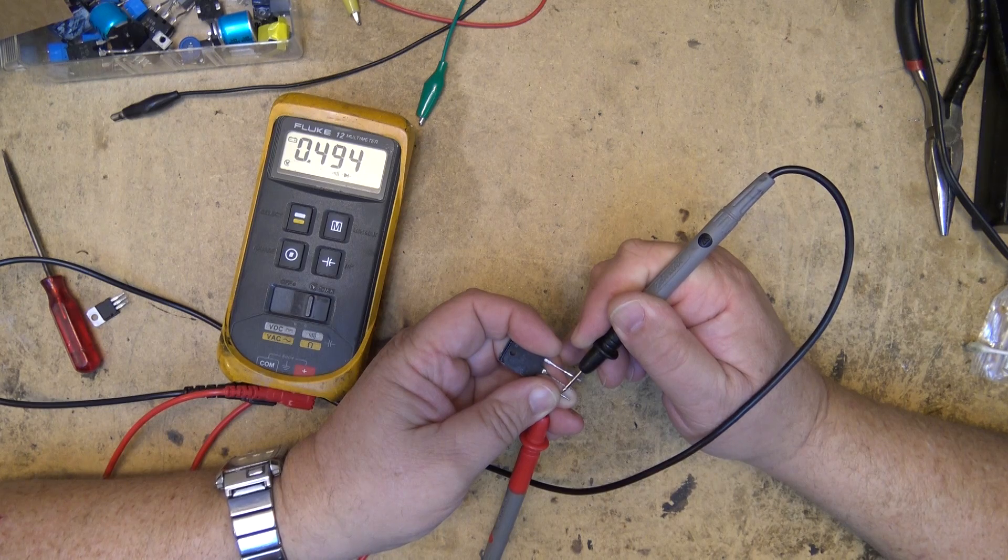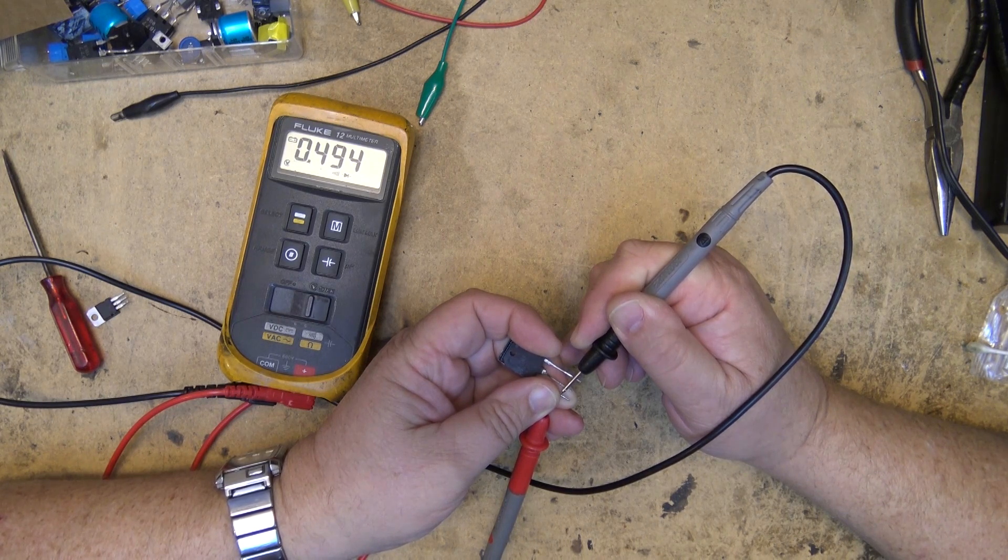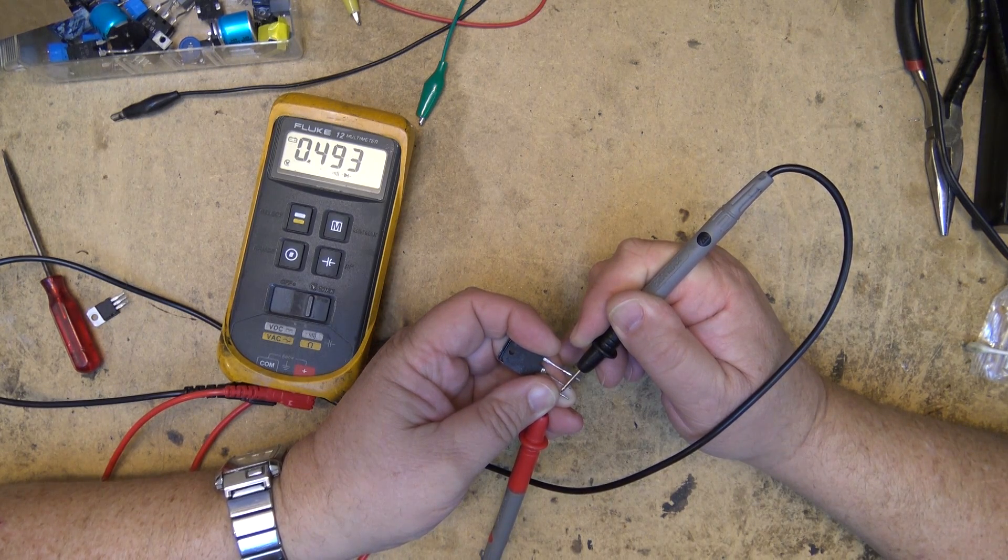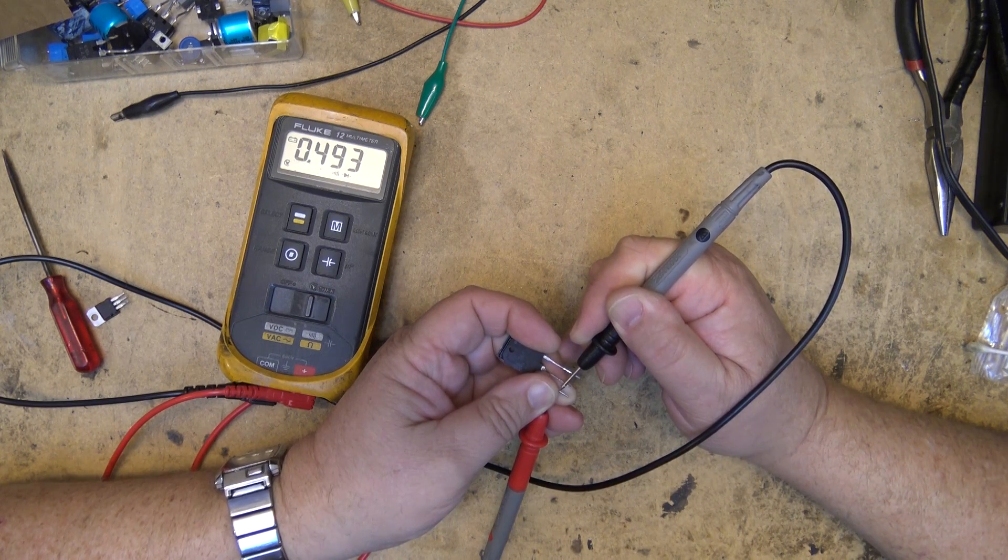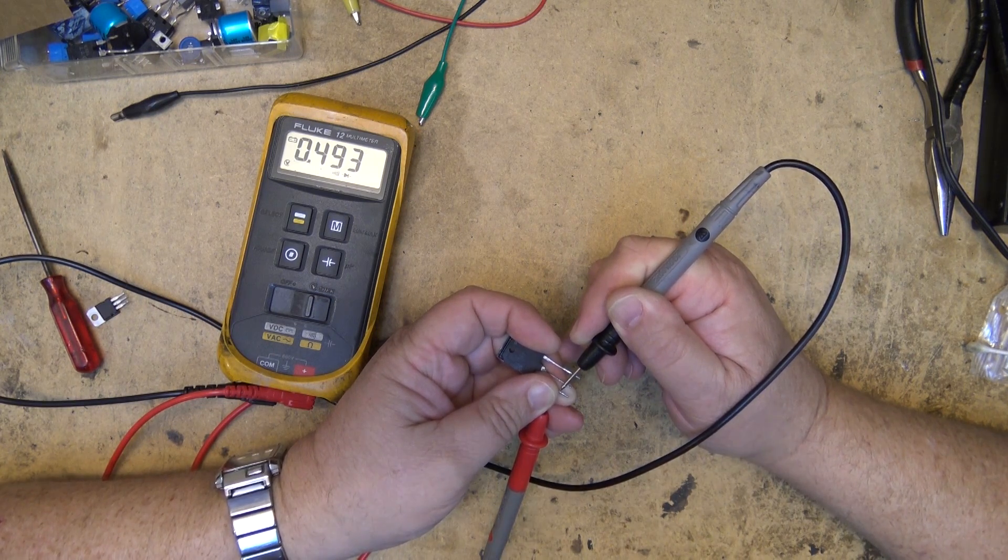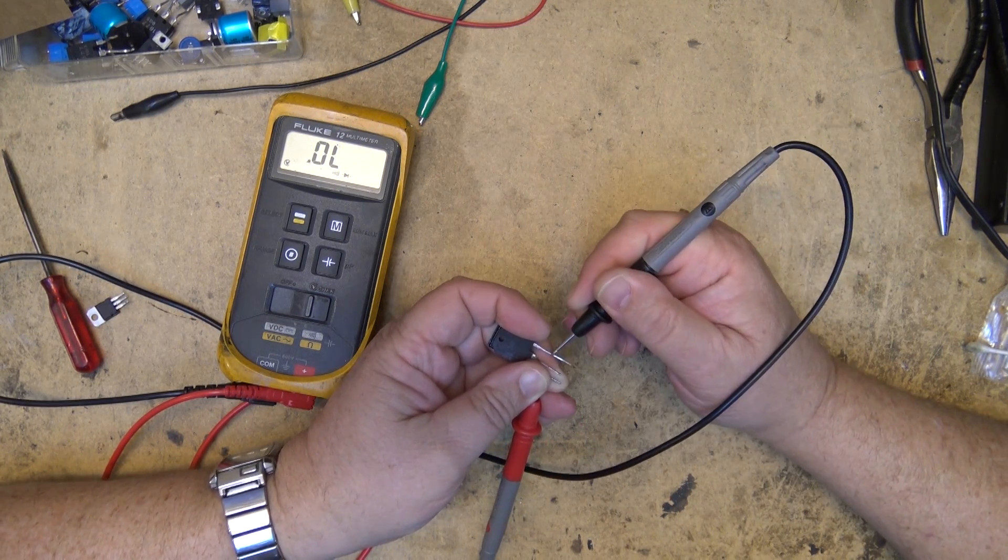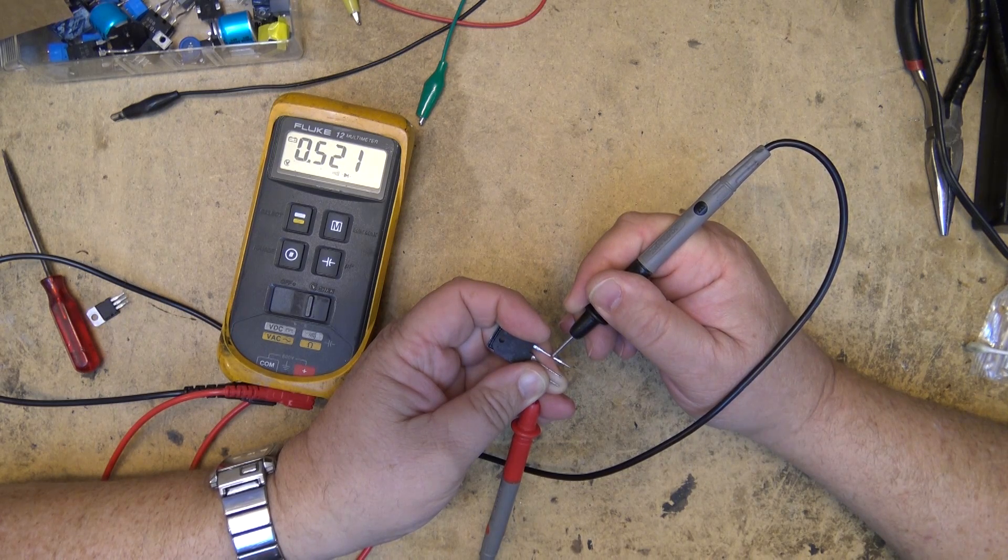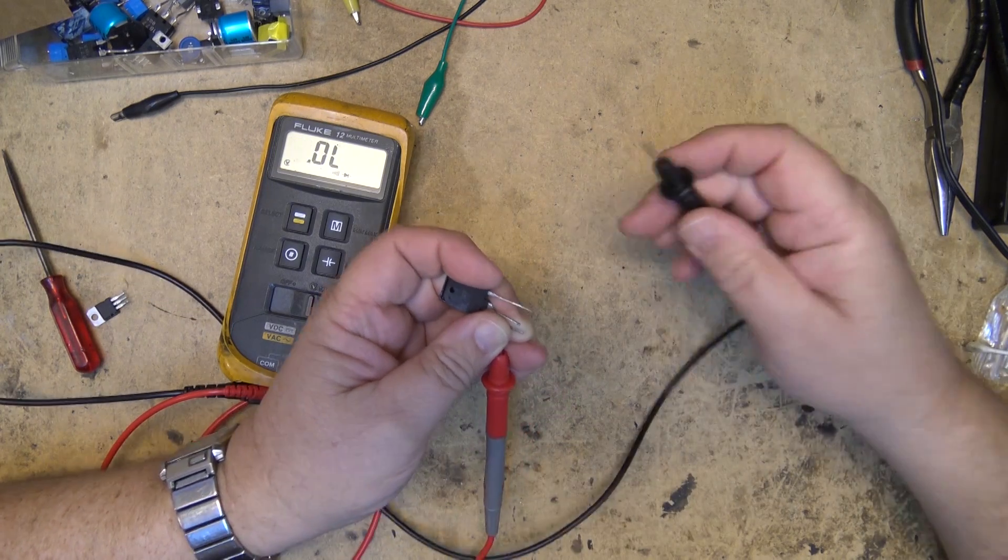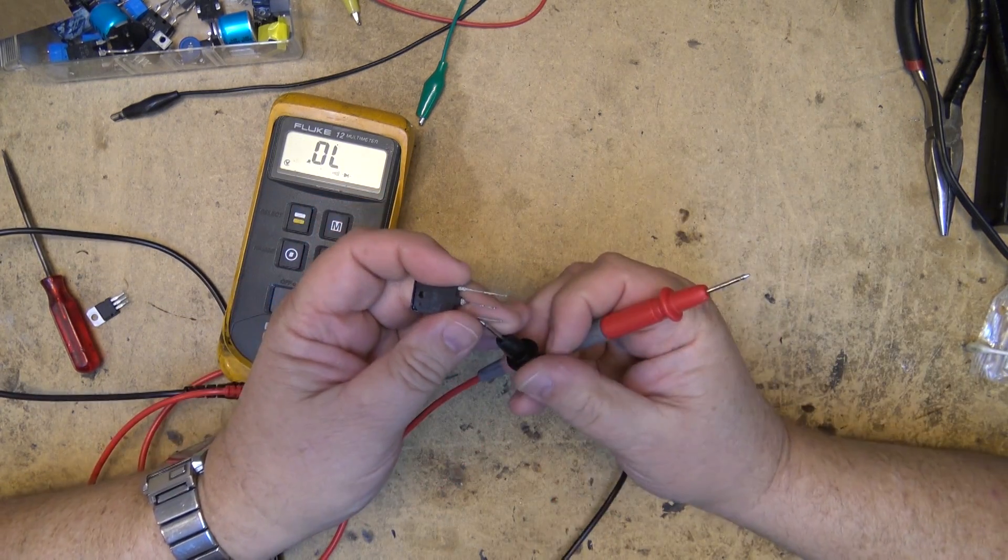This should probably be about 0.7 volt drop, but because my battery is getting low on my meter, I'm getting an inaccurate reading. But that doesn't matter because I'm just doing a diode test. I know I've got conduction in one direction, so base to collector I've got conduction, and I've got conduction base to emitter in one direction only.